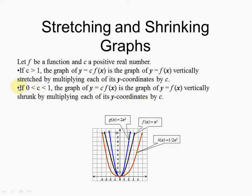On the other hand, imagine we have a constant that's between 0 and 1. If we have a constant between 0 and 1, then it would be a vertical compression — over here they call it shrunk, but I like using the word compression. Imagine a muffin — that's your f of x. Then if you put a constant bigger than 1 in front of that f of x, imagine you smushing that muffin down. When you do that, horizontally it will go outwards — it will become fat.